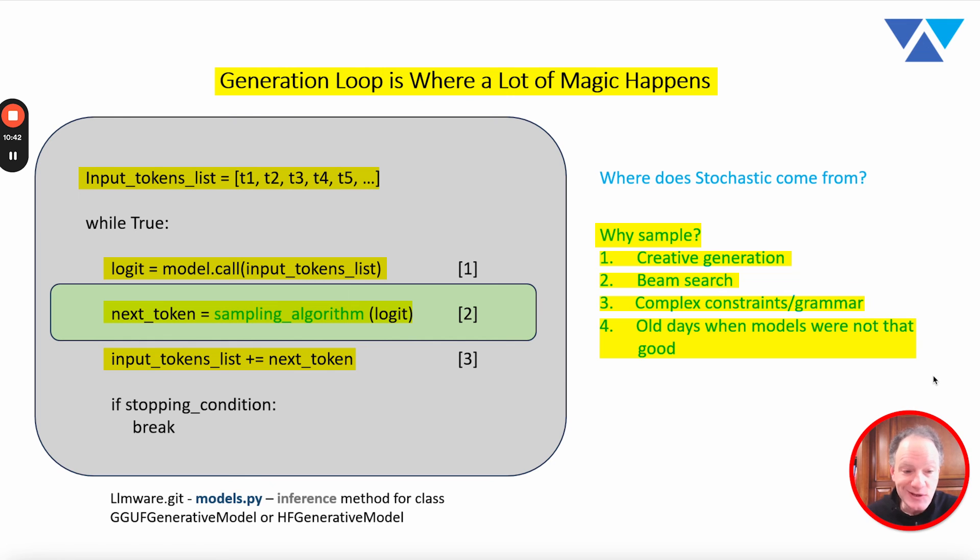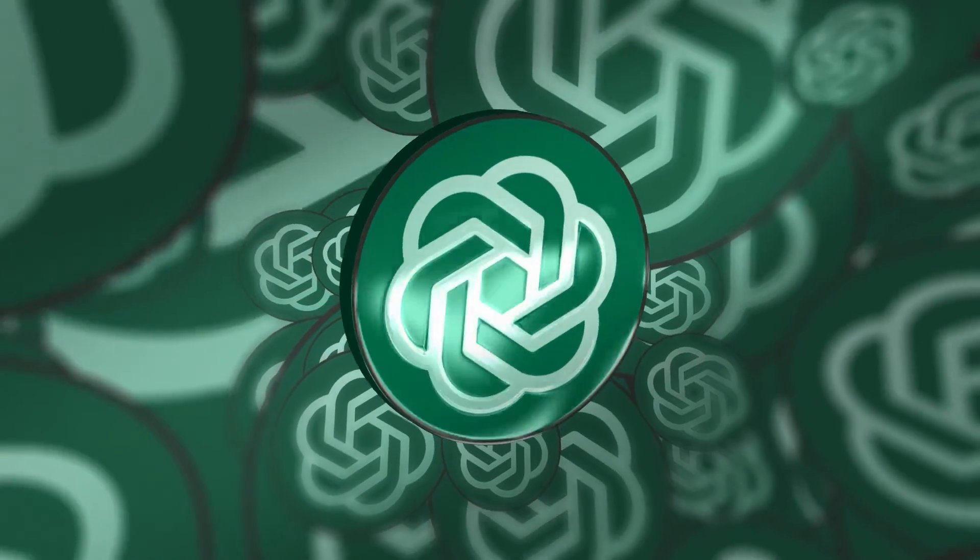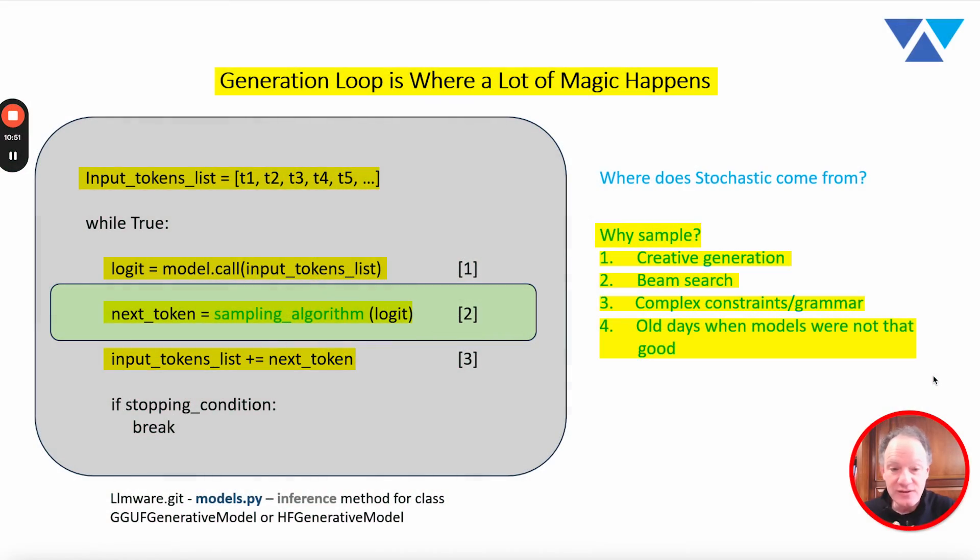The last reason for this, and I still remember the old days, like four or five years ago, one of the reasons you did this was models like GPT-2, they weren't really all that great. So a lot of times you'd get this really boring, low value, repetitive type of output. And so one of the reasons you wanted to crank up this whole sampling was just to get more interesting output out of the underlying model.